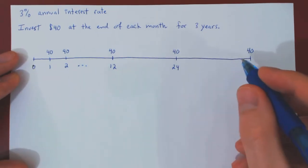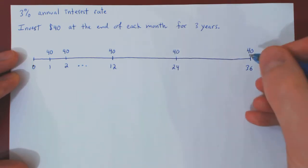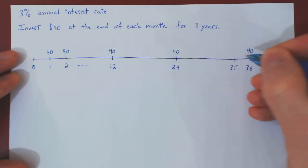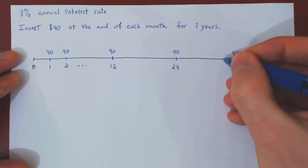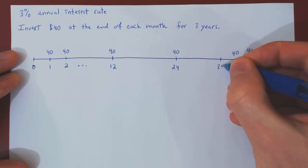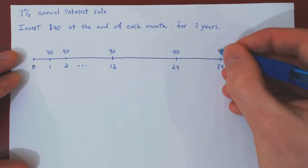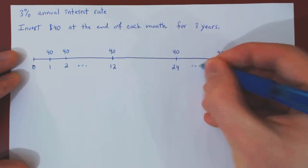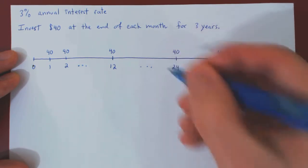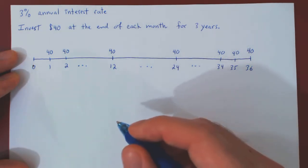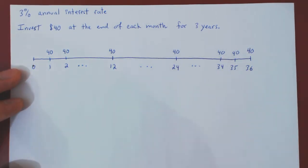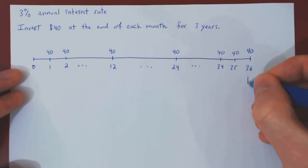If we go back by two months to include month 35 and month 34, you will see why quite shortly. Just as in the previous example, we will be asking for the final value of those investments and also the present value.